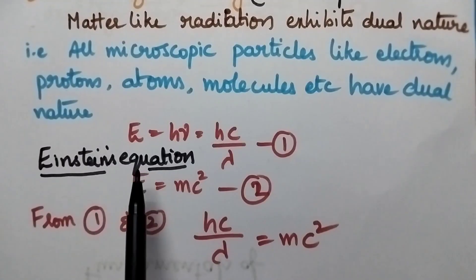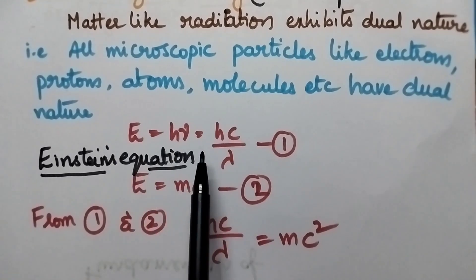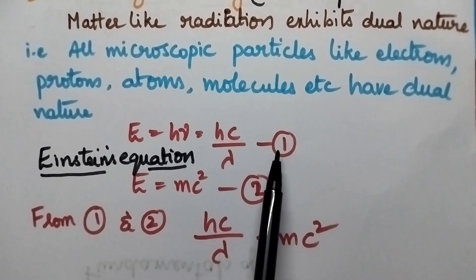So from Planck's quantum theory we have an expression for energy, E equals h nu, and it can be written as hc by lambda. Let this be equation number 1.